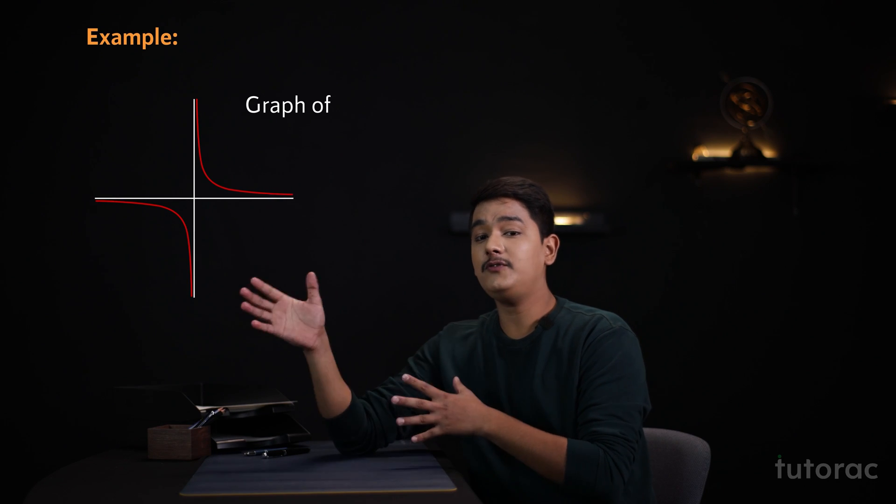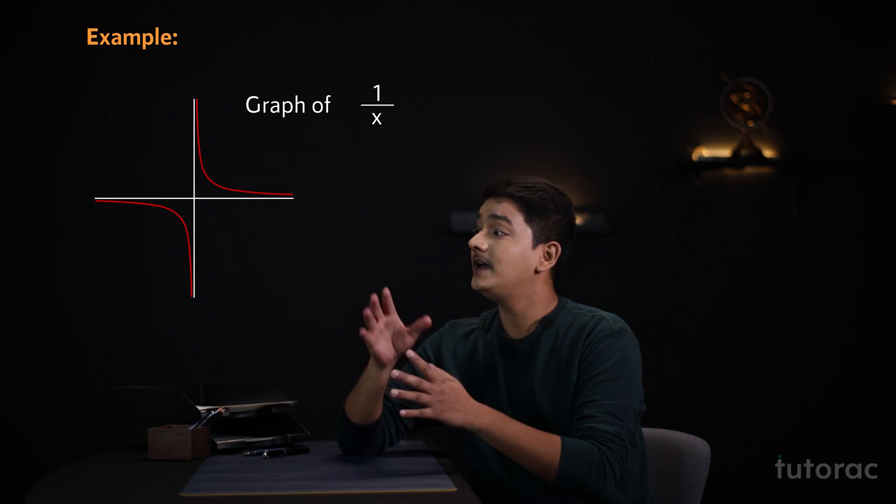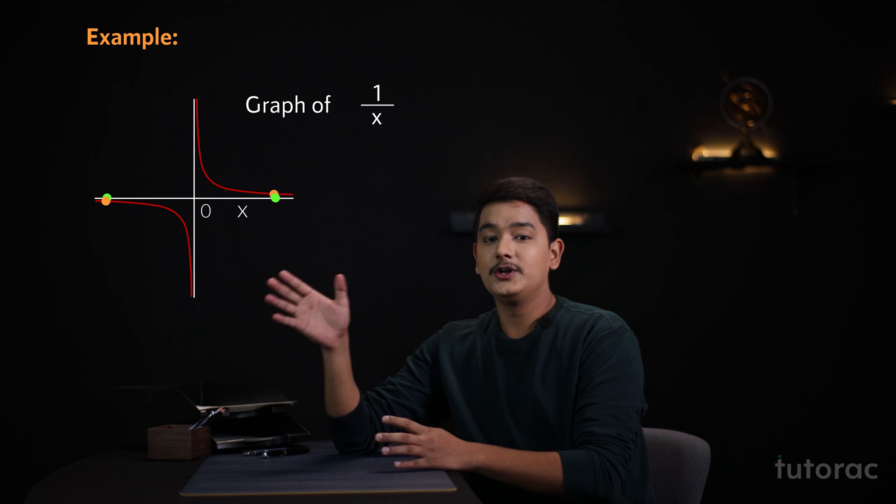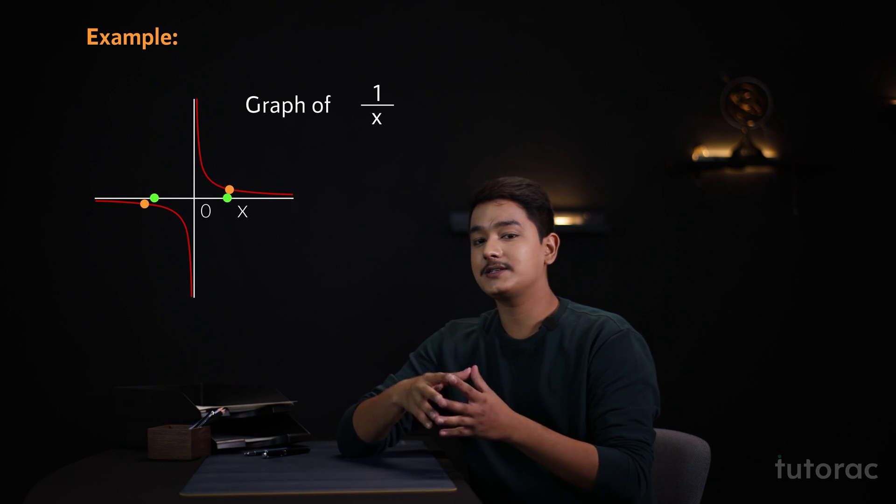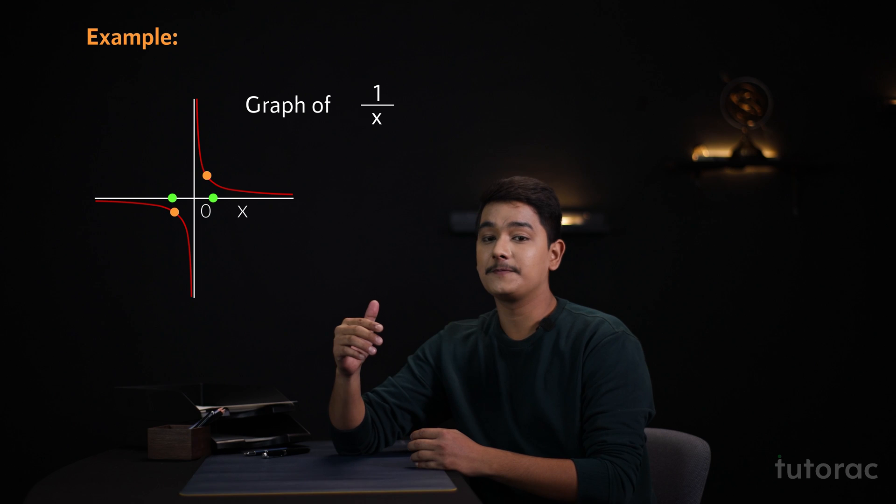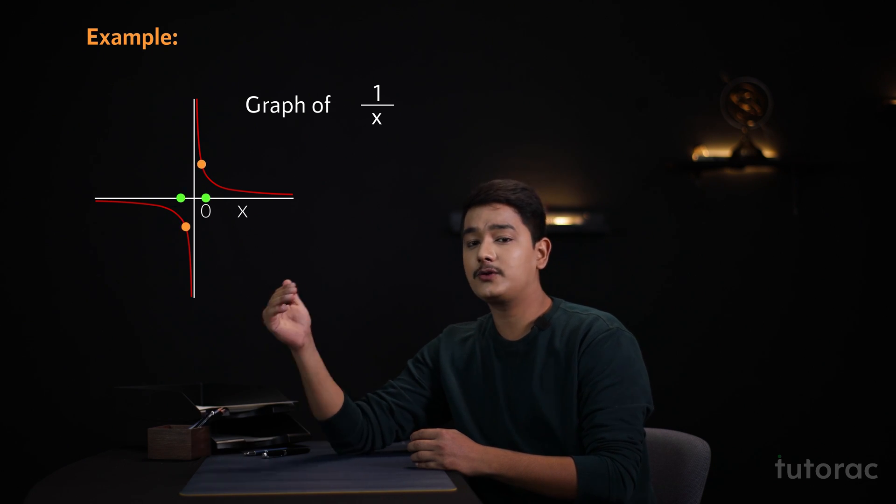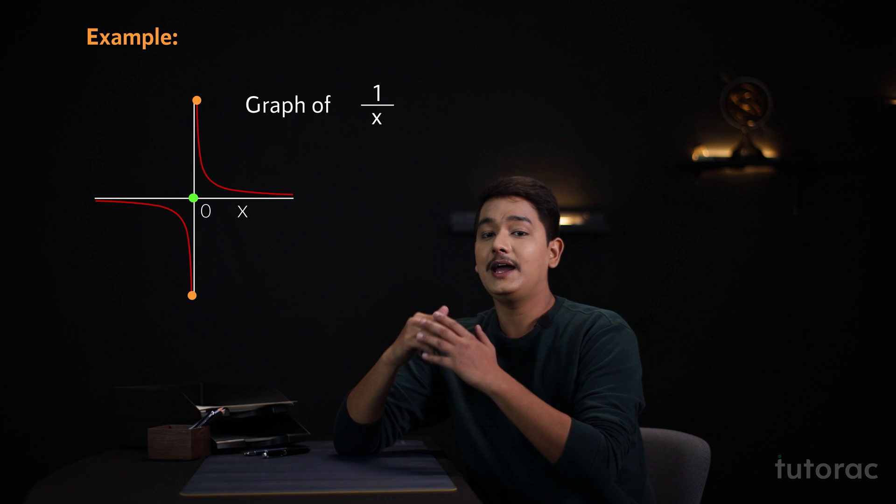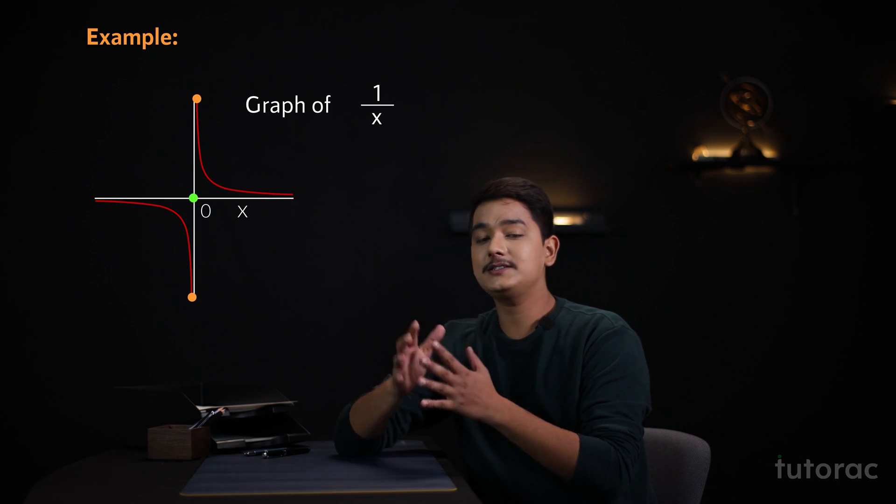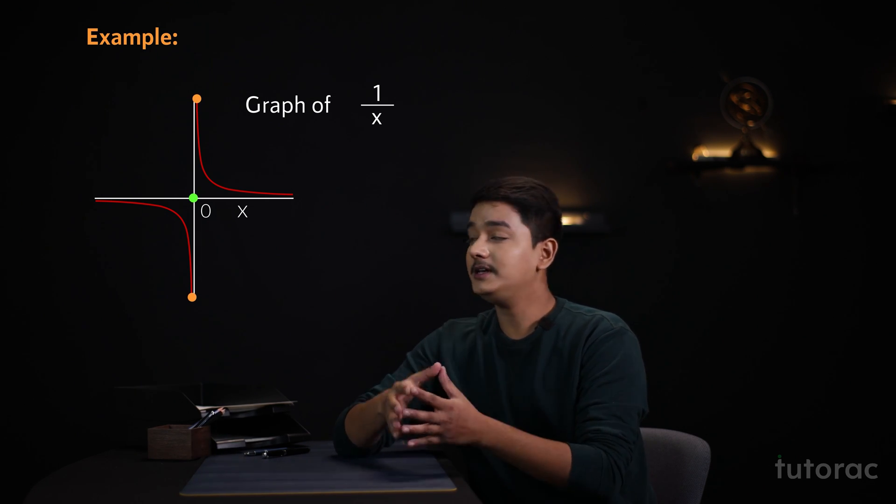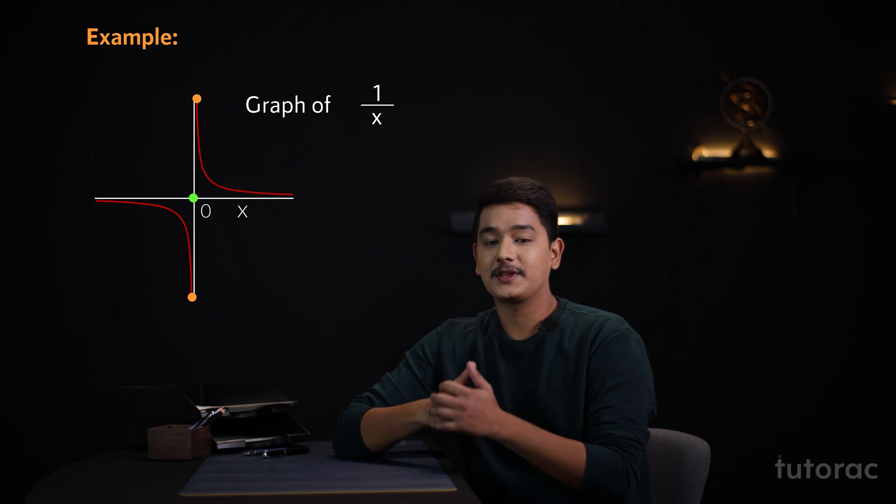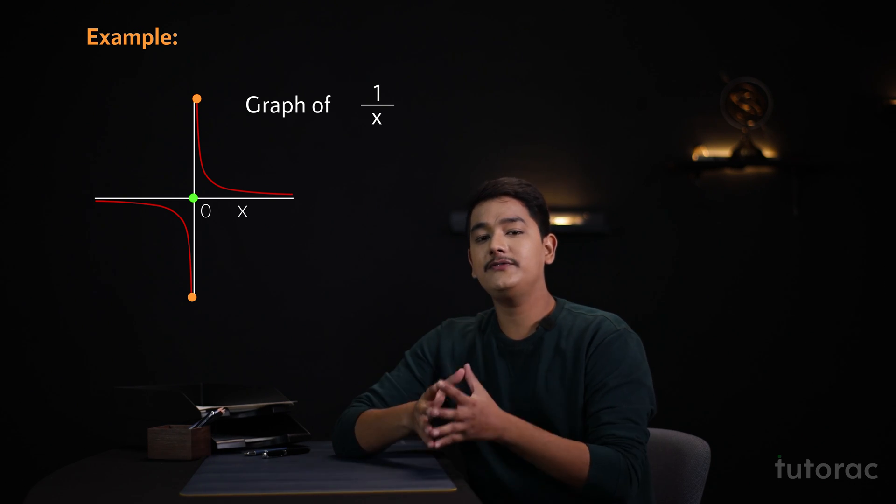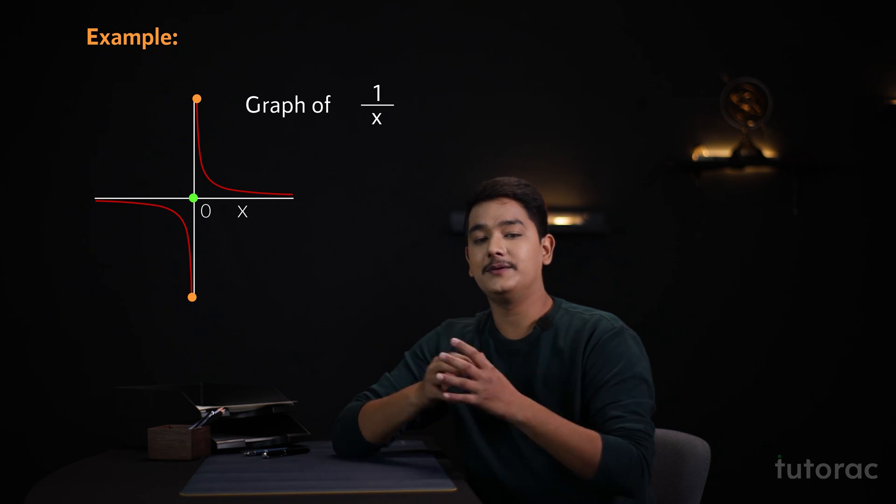If we take the graph of 1 by x here, then as x is approaching to 0, you can easily see that the value of 1 by x is approaching to infinity. And as we go closer and closer to 0, the value of 1 by x is getting larger and larger. And once x is approached to 0, then 1 by x can be taken as infinity. I hope you have understood why infinity is referred as an undefined number.